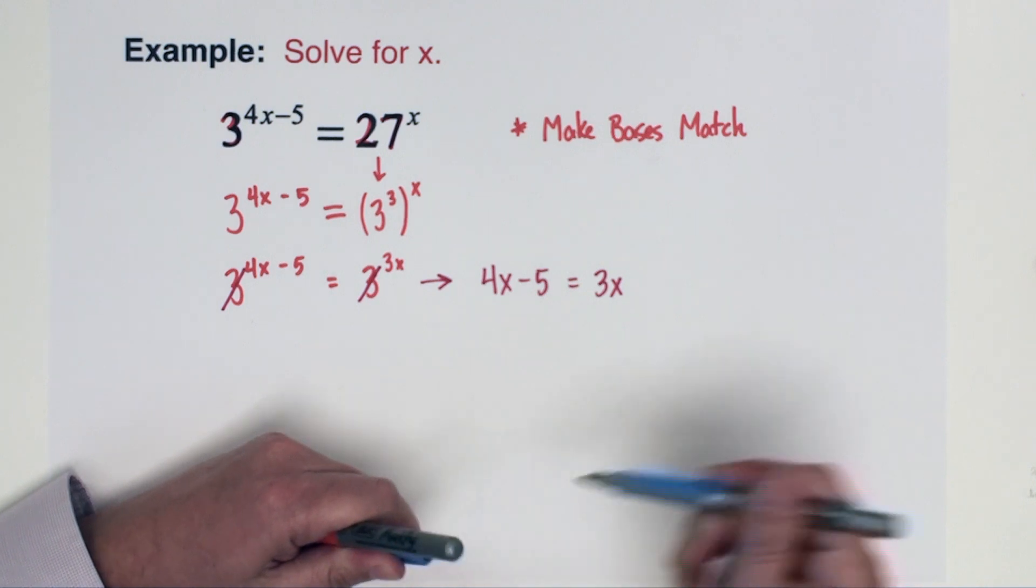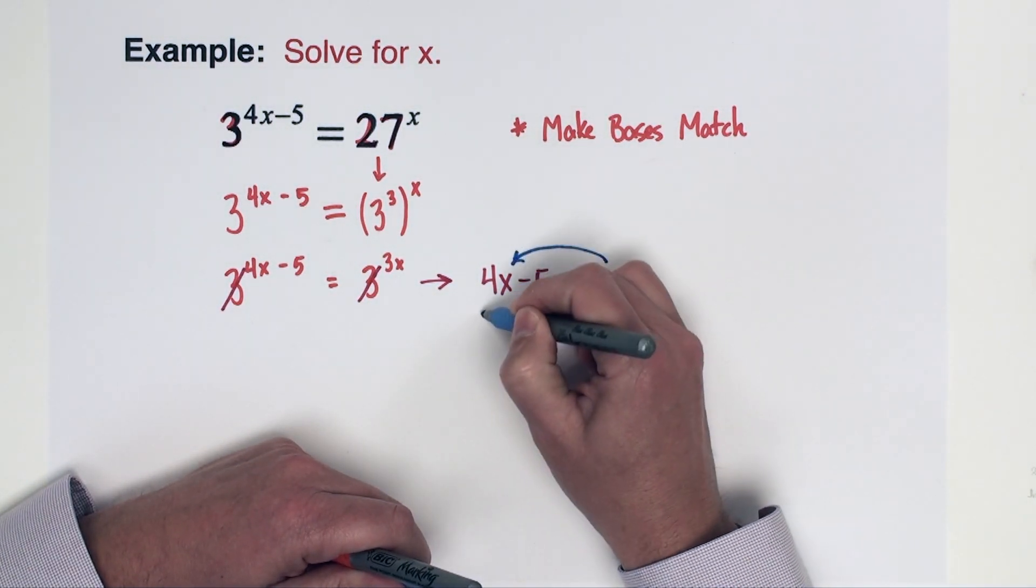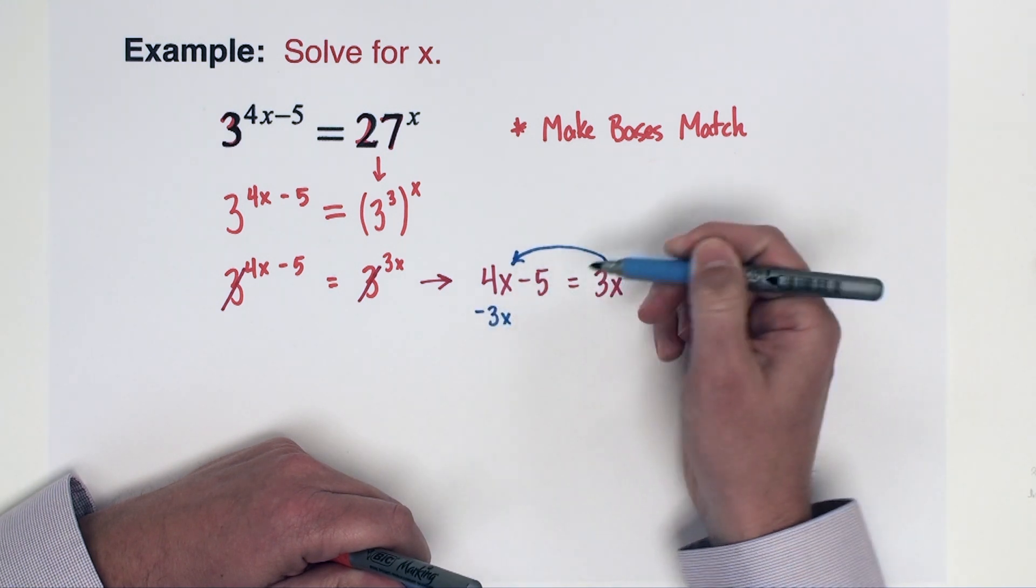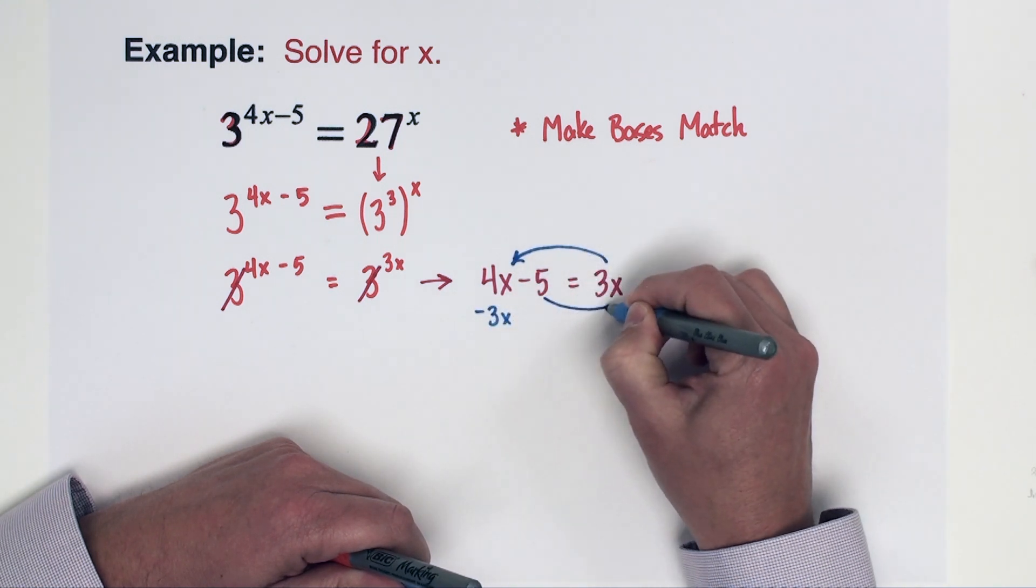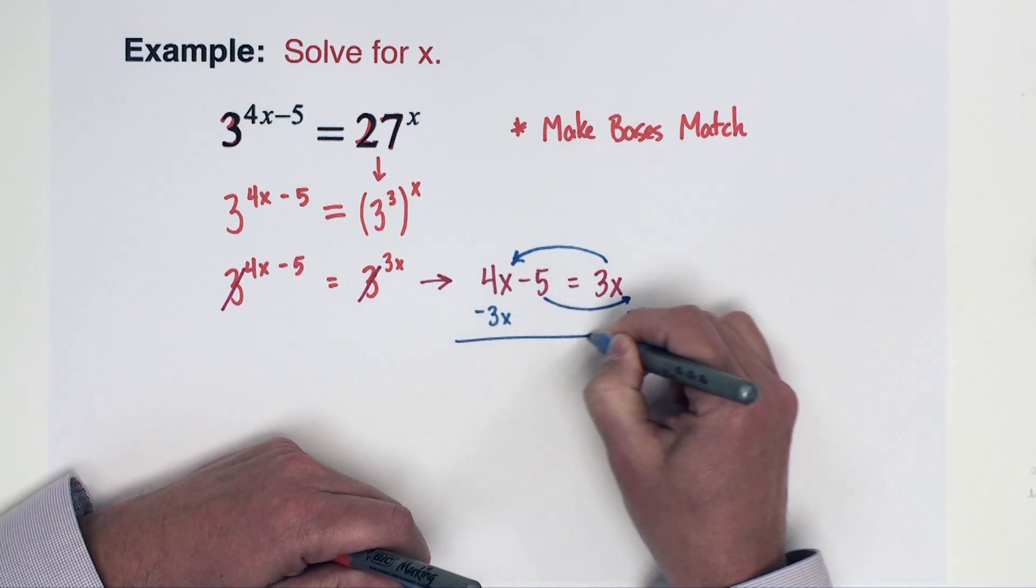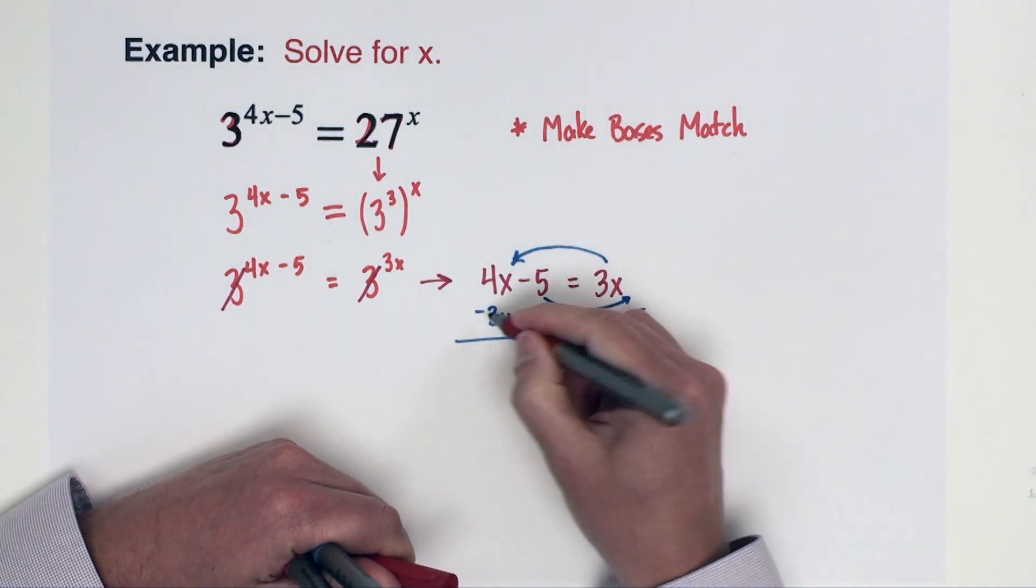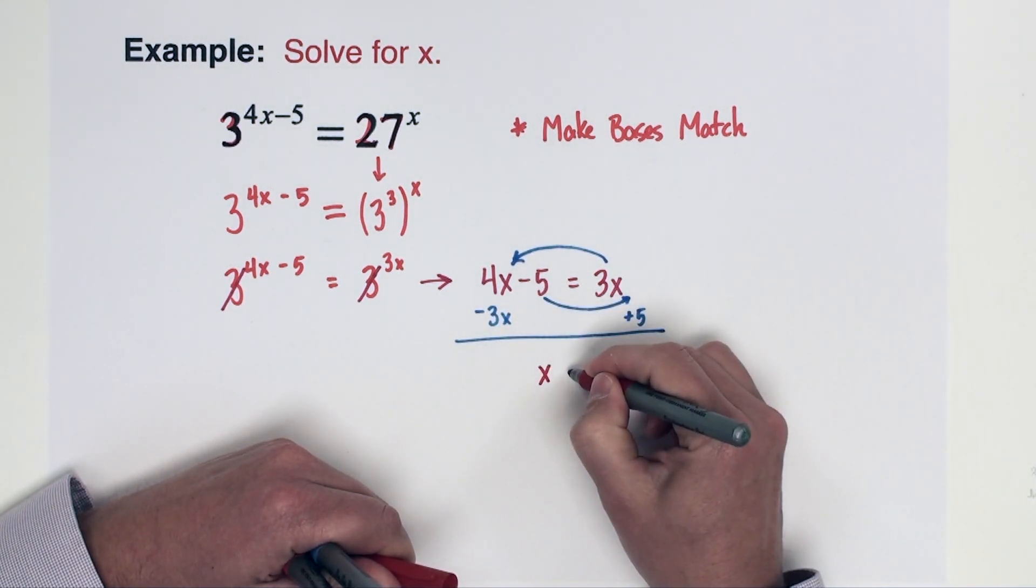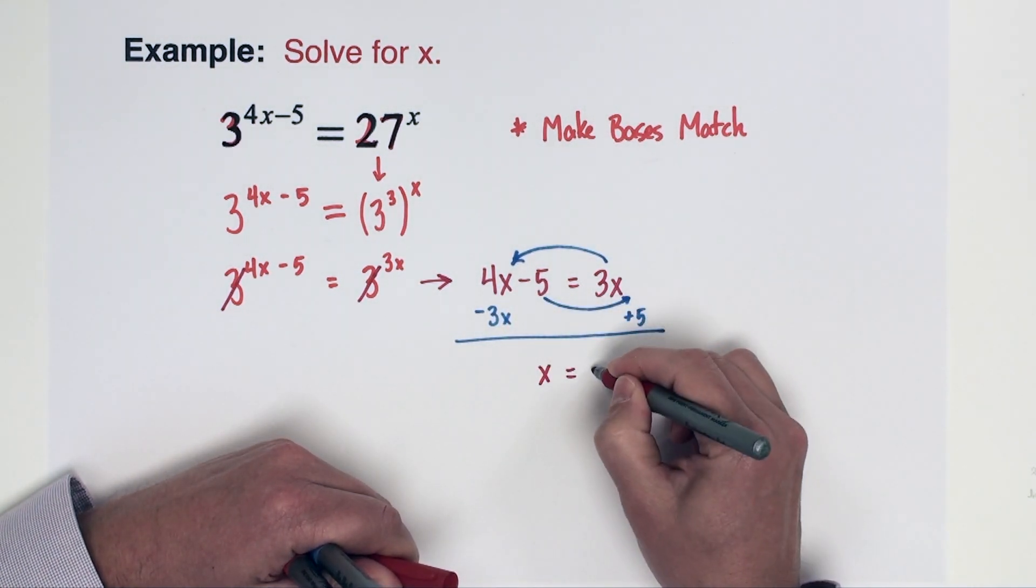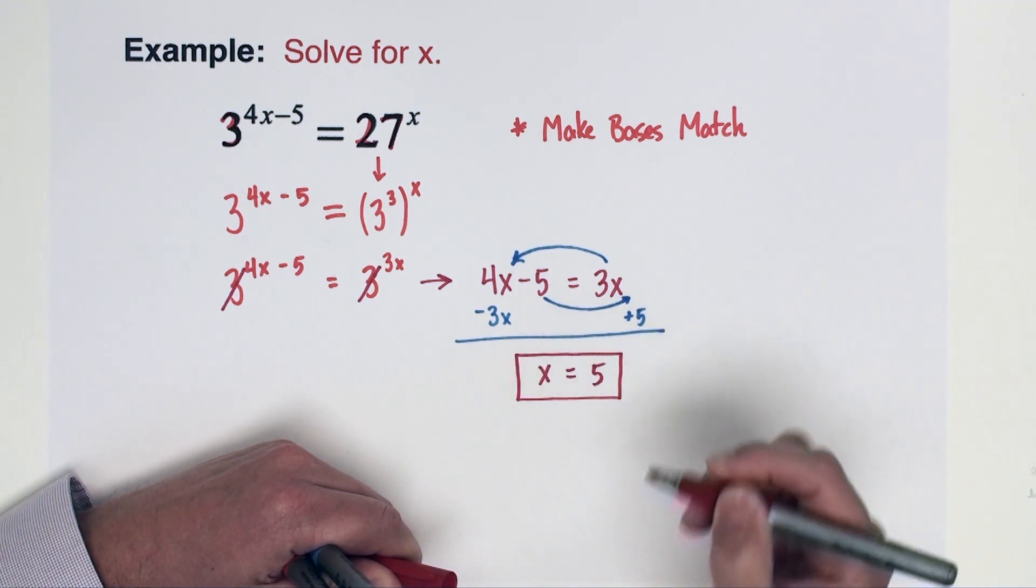You might want to keep the x's on the left side, so we can take this 3x and subtract it over to this side. I can take the 5 and add it over to the right side. So that's going to now give us 4x minus 3x, which is x equals 5. And there we have it, problem is finished.